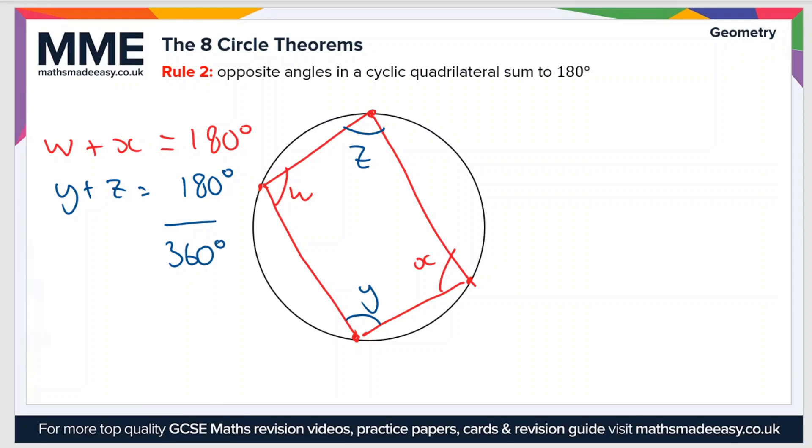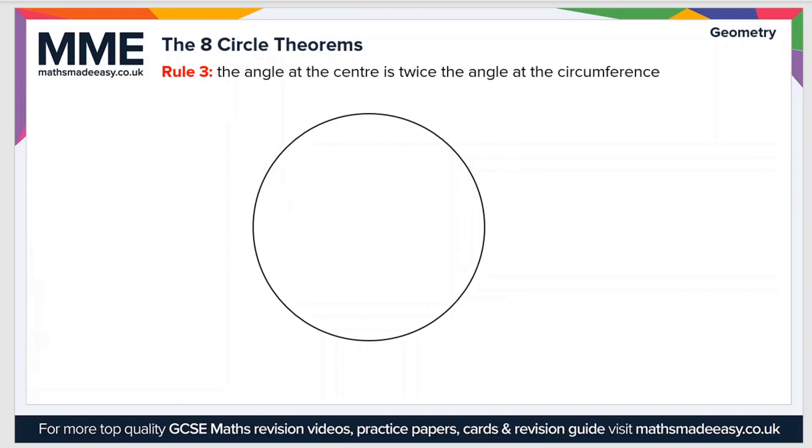Moving on to rule number three, and that is that the angle at the center is twice the angle at the circumference. What does that mean? Well, let's start with drawing the center of the circle. If we draw two radii, which is a line from the center of the circle out until it hits the point on the circumference.